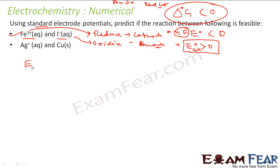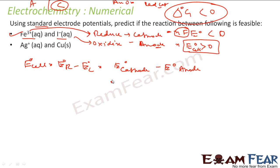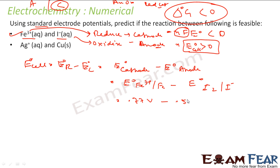E°_cell = E°_cathode − E°_anode. Cathode reaction: Fe³⁺ → Fe²⁺ (reduction), E° = 0.77 V. Anode reaction (written as reduction): I₂ → I⁻, E° = 0.54 V. So E°_cell = 0.77 − 0.54 = 0.23 V, which is greater than zero. Therefore, this reaction is feasible.